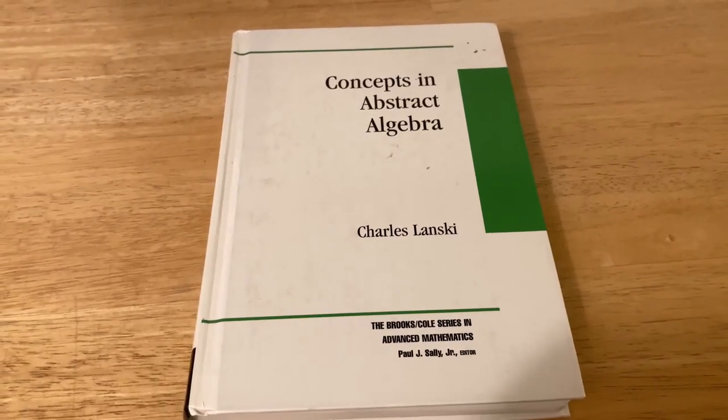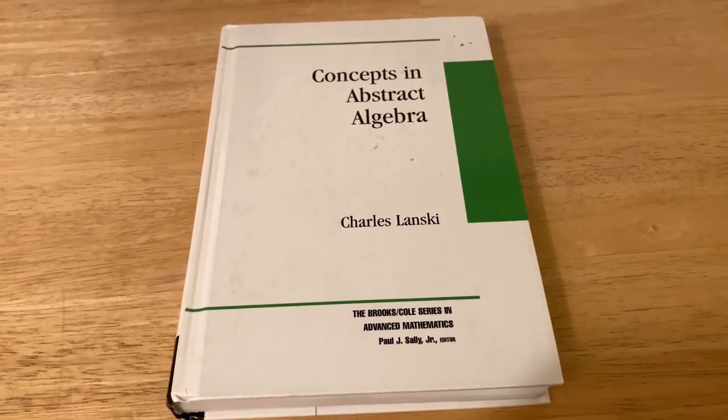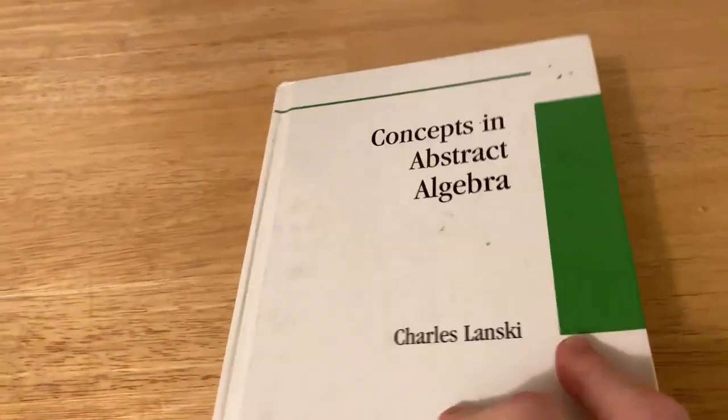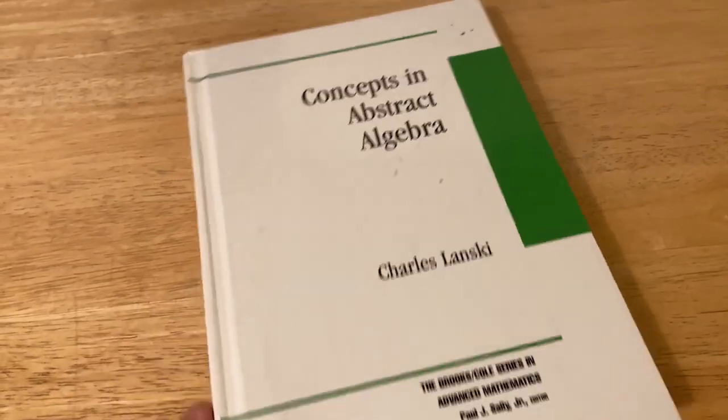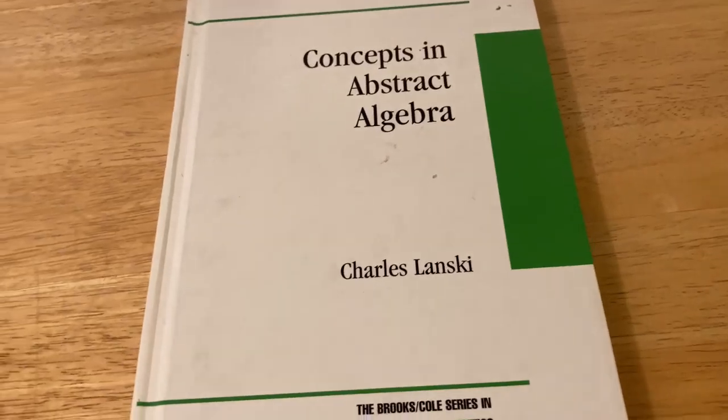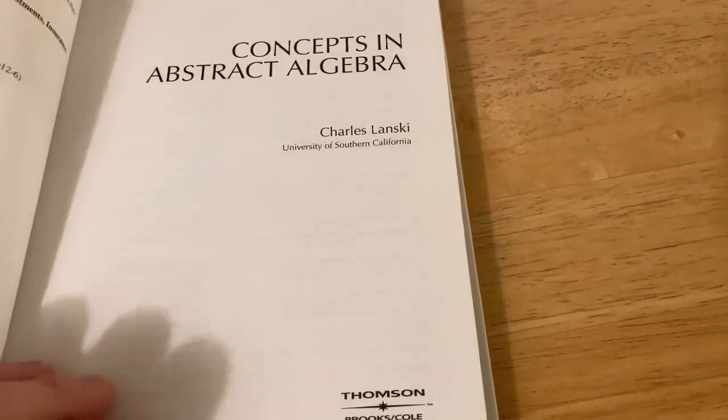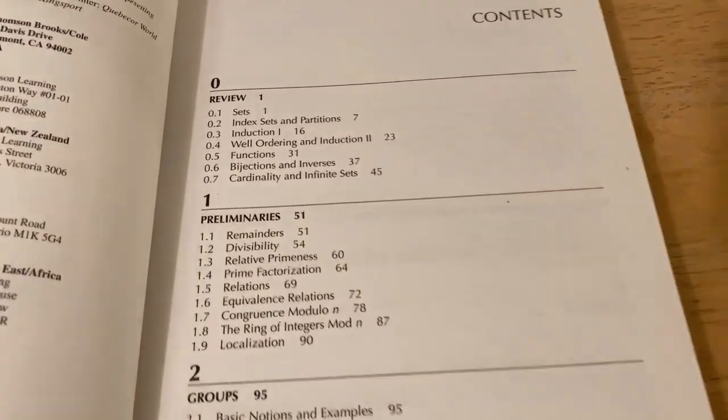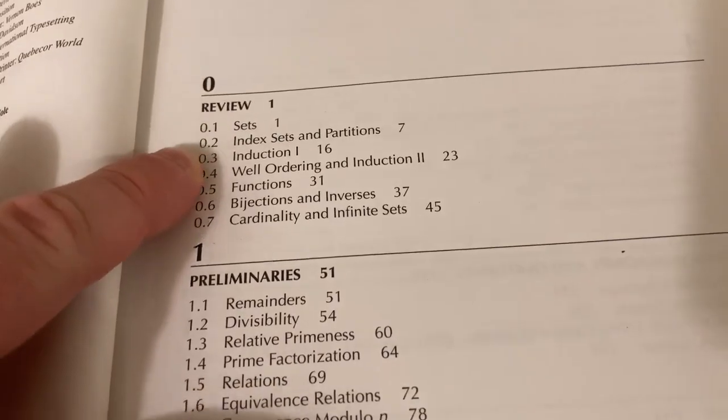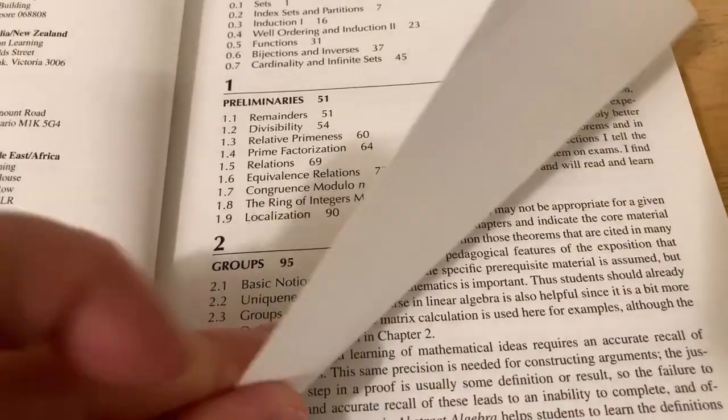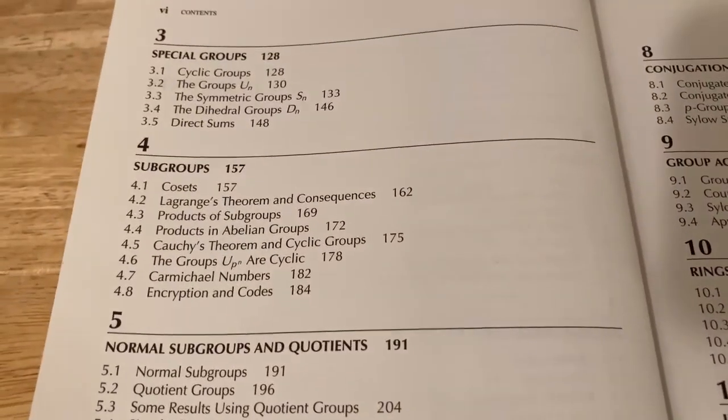This next book was actually recommended to me by a former professor that I worked with. I did an independent study long ago, and one of the professors I was working with suggested that I get this book. So I went online and bought this book. It's called Concepts in Abstract Algebra by Charles Lanski. And this book is really different from other abstract algebra books because it has proofs and they're extremely detailed. Let's just look at the contents here. It's got a lot of stuff that you're not going to see in other abstract algebra books.